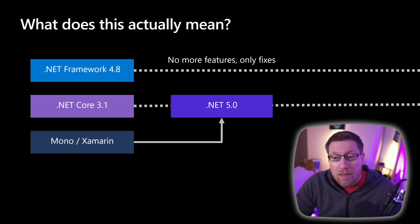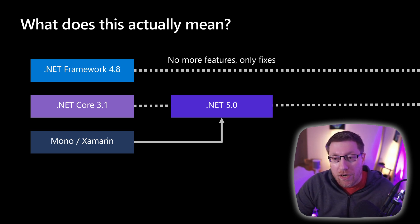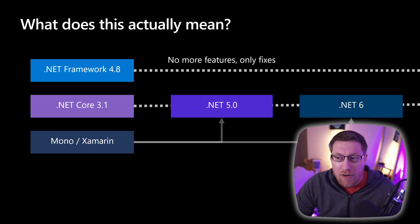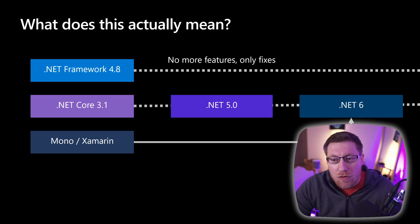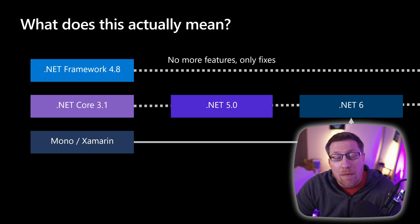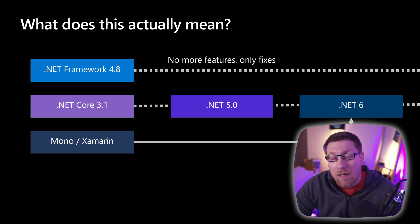The only other thing that changed — because of COVID and other things — is that we don't actually do our mobile migration in the .NET 5 timeframe. This is postponed to .NET 6. So in .NET 5 there are no mobile bits yet, but the vision is still the same, and it will happen for the .NET 6 version of the platform.